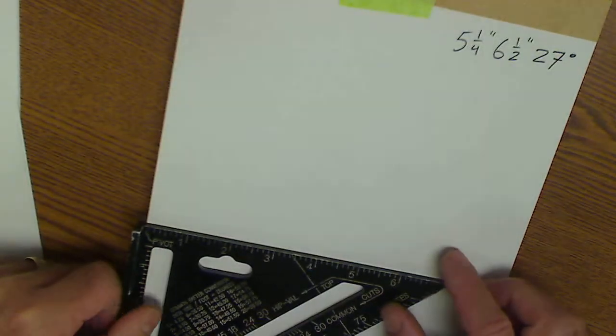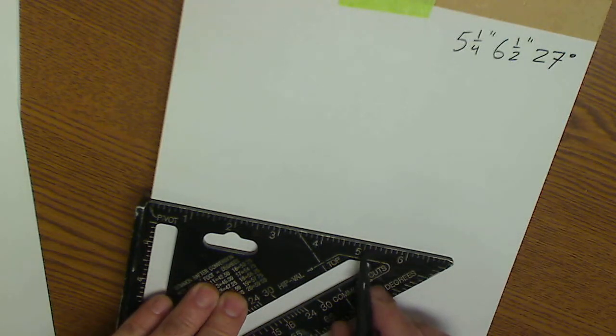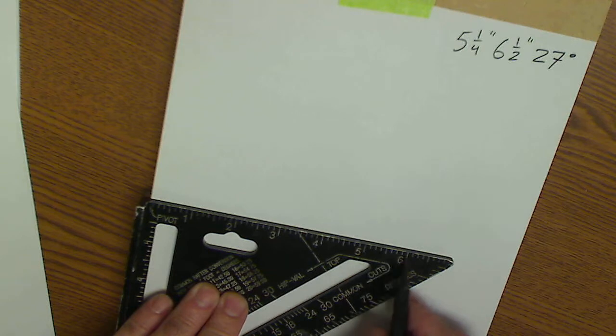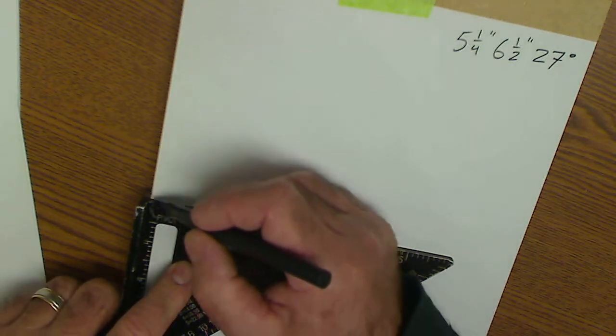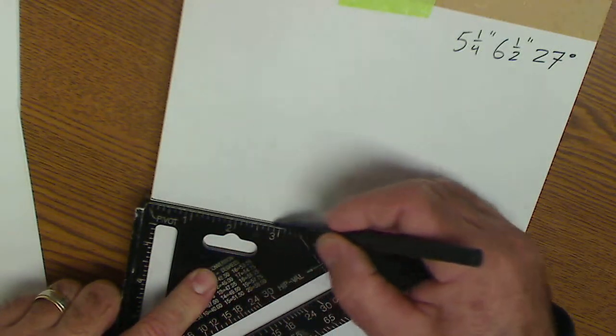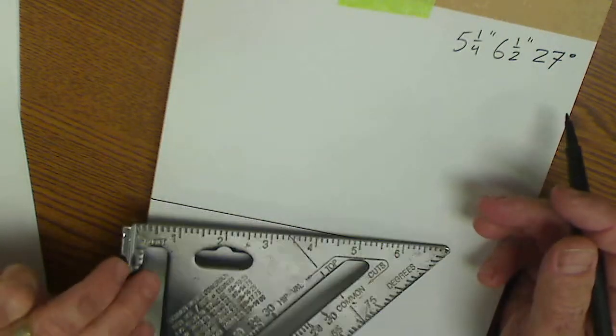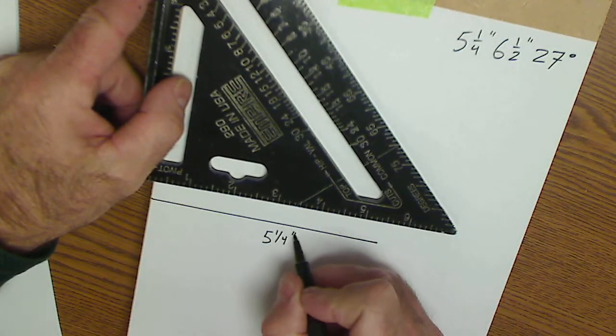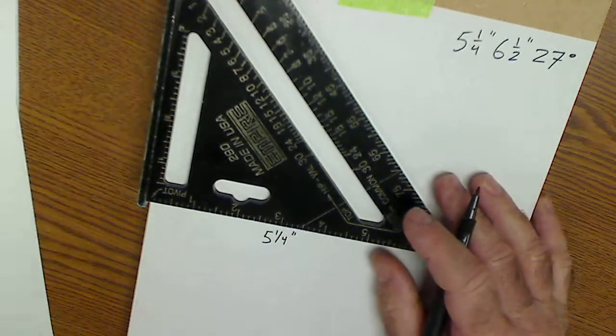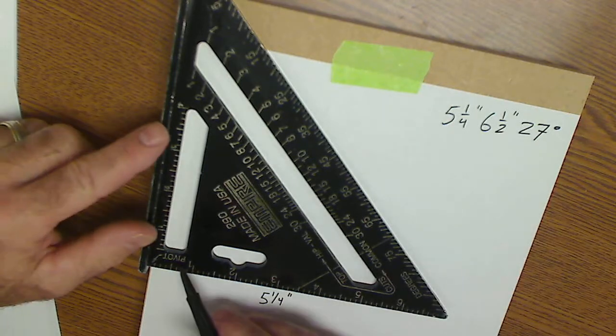So you grab your speed square. You want to come down 5 1/4. Well, you can see here that the tick marks on this rule on my speed square - there's only 8 of them, so that means each one's an eighth. So 5 1/4, I start right here at this point, and I go to 5 and 1, 2, 5 1/4. Okay. Then the next thing I need to do, this is 5 1/4 of an inch long, so I need to set a 27-degree angle. So I'm looking up here. See how this thing says pivot?